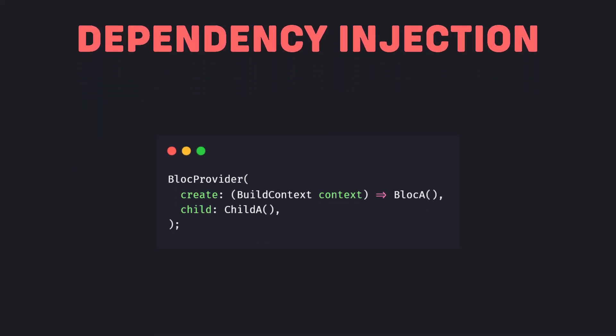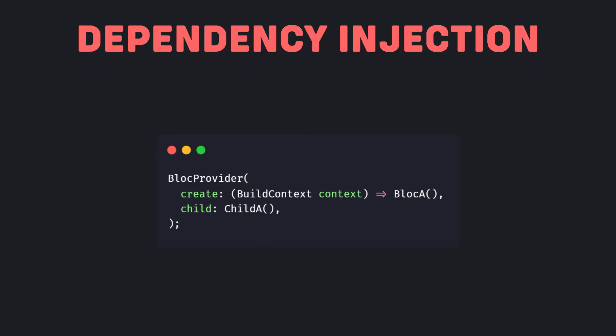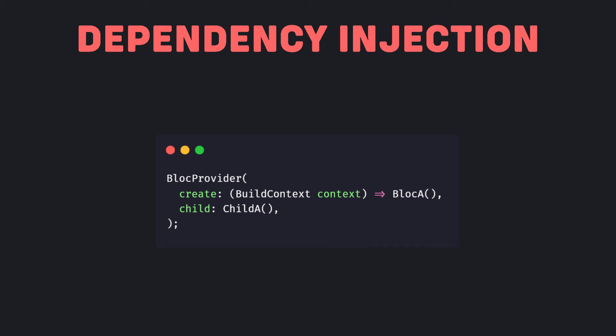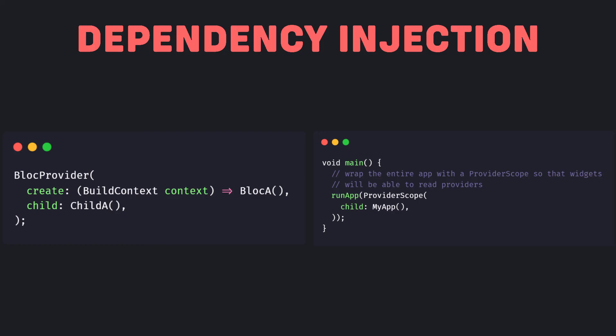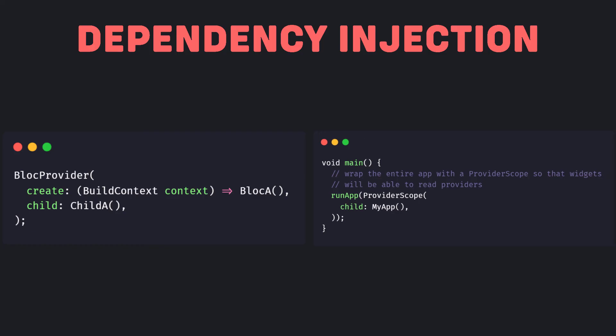Now let's check dependency injection. Bloc uses BlocProvider for dependency injection — it is a Flutter widget which provides a Bloc to its children, used so that a single instance of a Bloc can be provided to multiple widgets within a subtree. In RiverPod we can wrap our root widget with a ProviderScope, which is a widget that stores the state of all the providers we create.